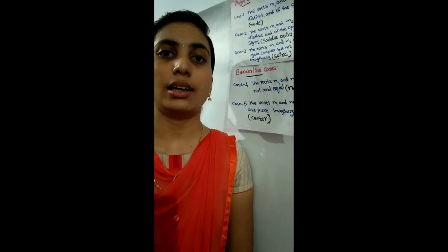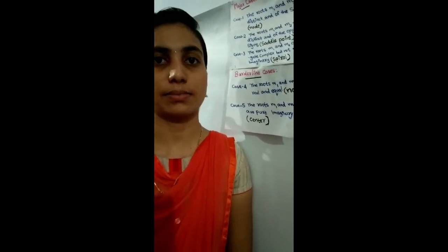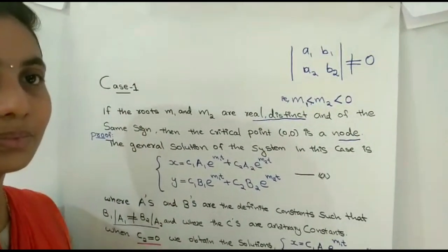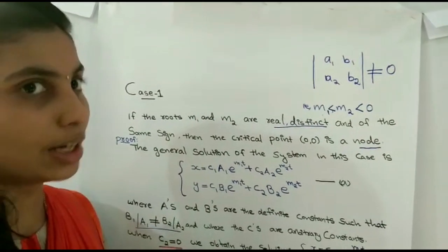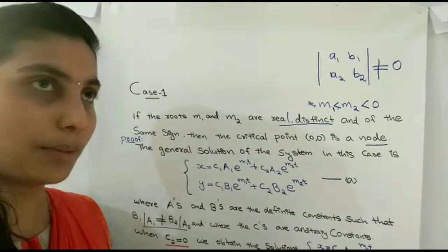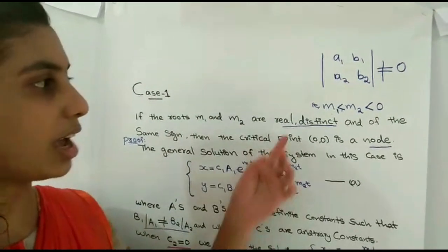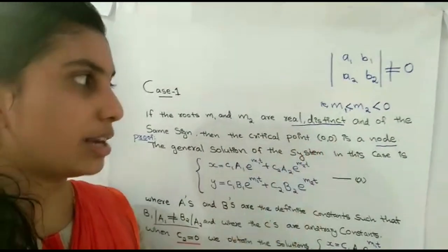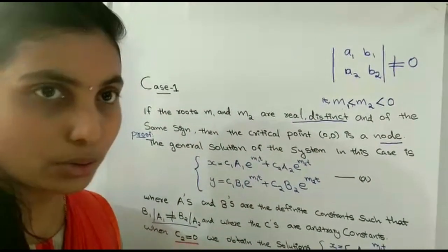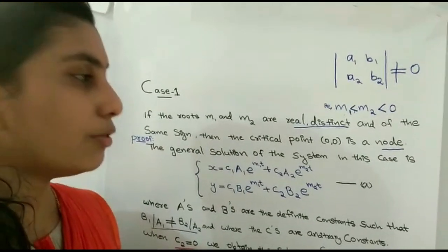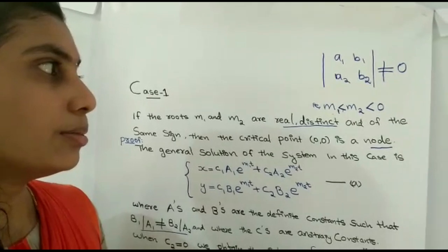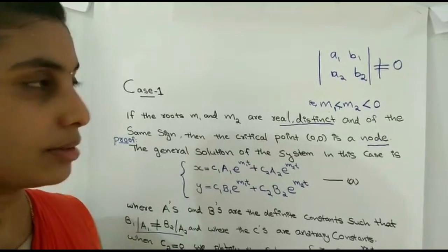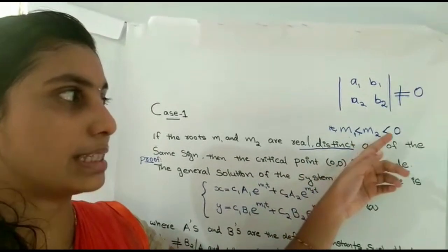Now we enter the details of the major cases. Case 1: if the roots m1 and m2 are real, distinct, and of the same sign, then the critical point (0,0) is a node. To prove this, we first assume both roots are negative, that is, m1 < m2 < 0.